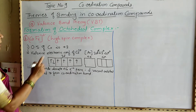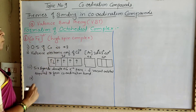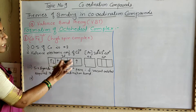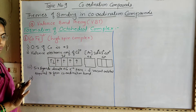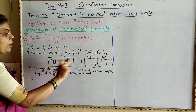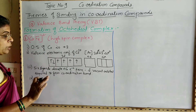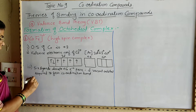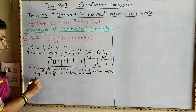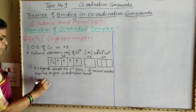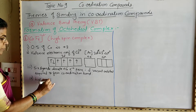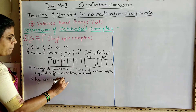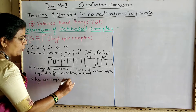Now here it is a high spin complex, and therefore pairing of electrons is not possible. These 4 unpaired electrons do not undergo pairing because it is a high spin complex. Thus pairing is not possible.